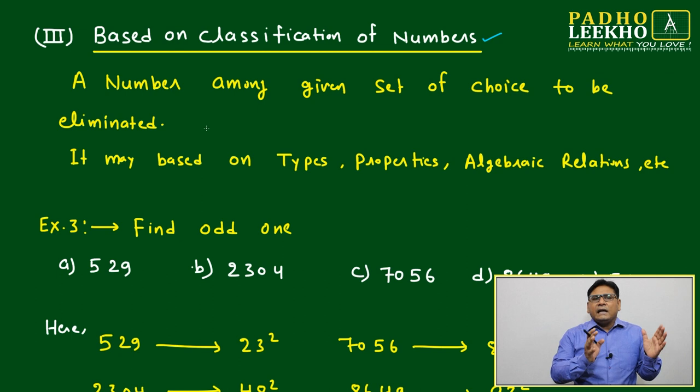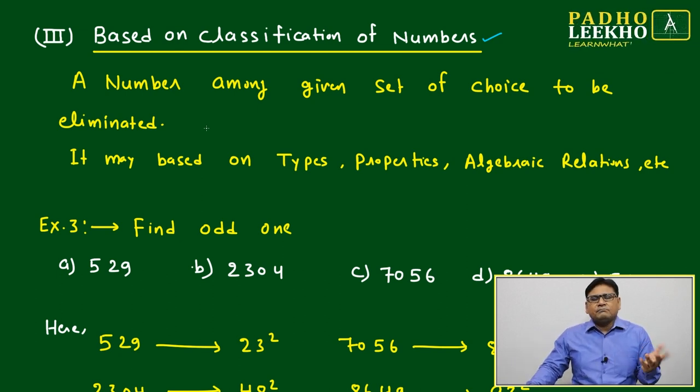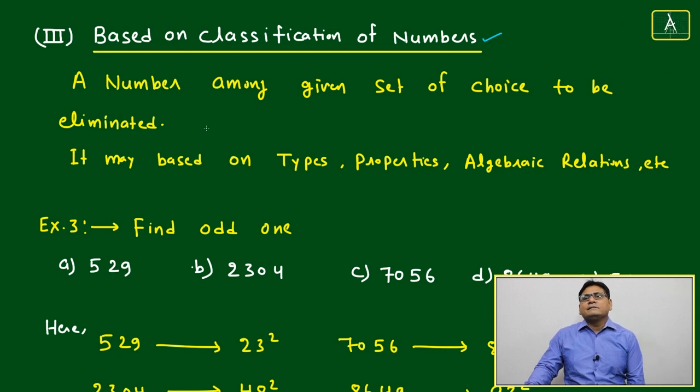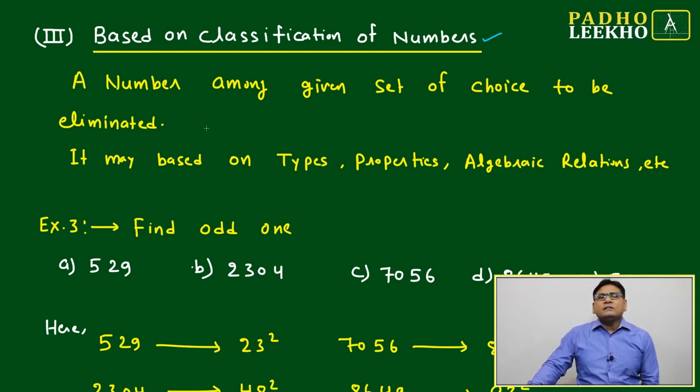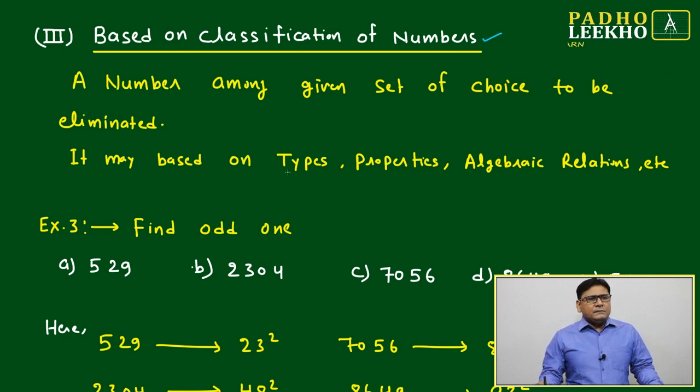Once we have found any particular relation is prevailed for four choices out of five, that relation only can be valid and which is not followed that will become odd. Just we'll check one example.